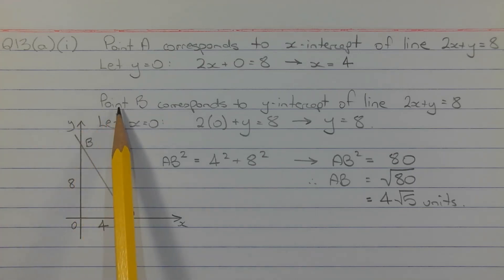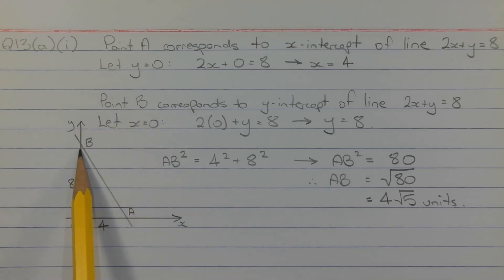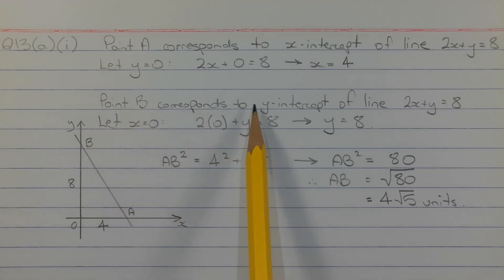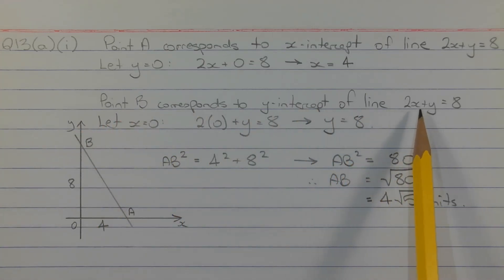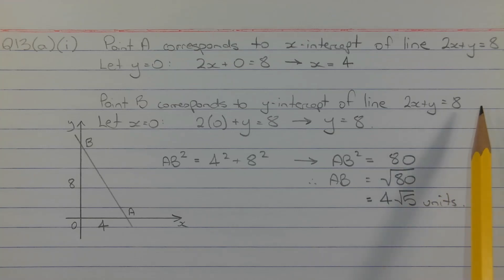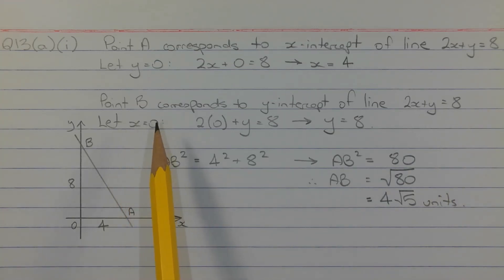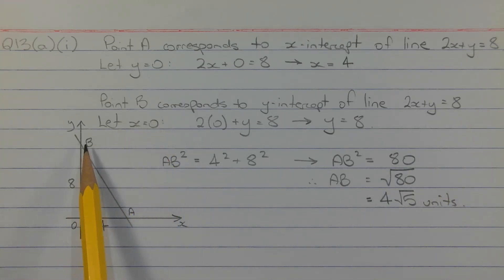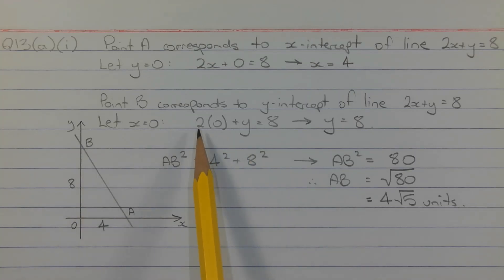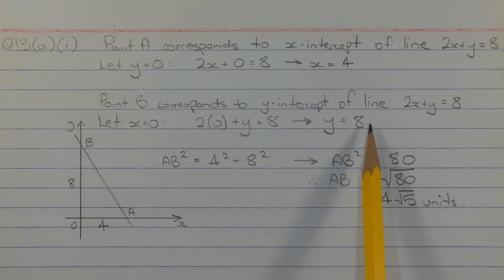Point B, this point here, corresponds to the y-intercept of the line 2x plus y equals 8. So to find the y-intercept we let x equals 0, since the x-coordinate of point B is equal to 0. So 2 times 0 plus y equals 8, so y is equal to 8.